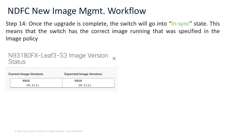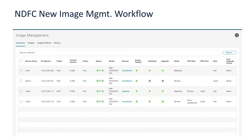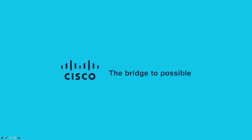The current and expected image versions would match, and that's when it goes in sync. This is how the window actually looks — we have full details of each switch, the associated policy, and the status going in sync once the upgrade is complete. We have the reason tab where we can look at the complete installation log. Image staging, validation, and upgrade are now separate processes, along with more details on the switch itself. That was the image management policy in NDFC. Thank you for watching.